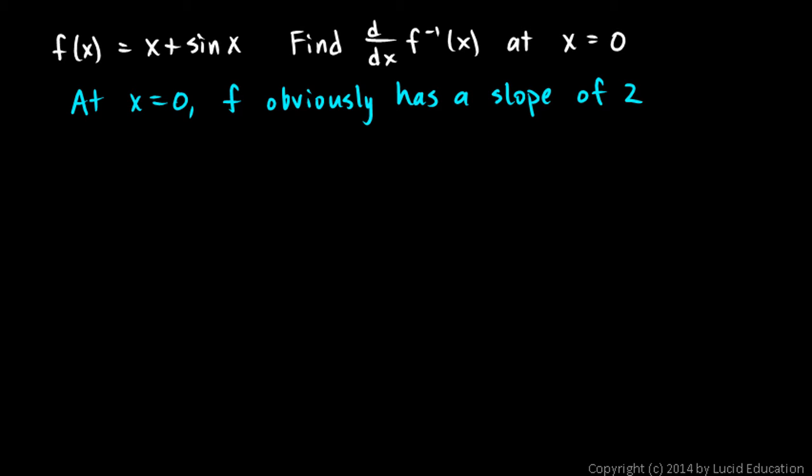So if f has a slope of 2, then the slope of its inverse must be the reciprocal of that. So the slope of f inverse must be 1 half. And that's it. You're done.